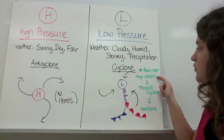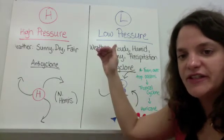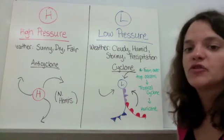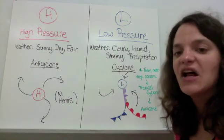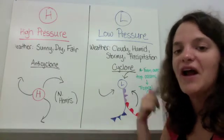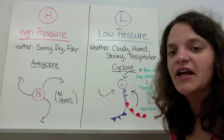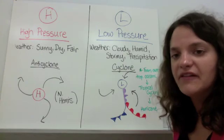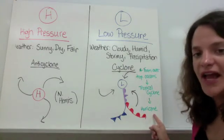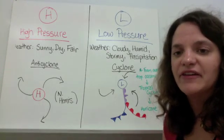Cyclones that form over tropical oceans — between 25 degrees south and 25 degrees north latitude — are called tropical cyclones. They gain a lot of energy from the ocean's heat and moisture, which drives the storm and causes it to rotate faster and faster. If it stays over warm water long enough to gain more momentum, it might eventually become a hurricane. This has been an overview of pressure systems and fronts.